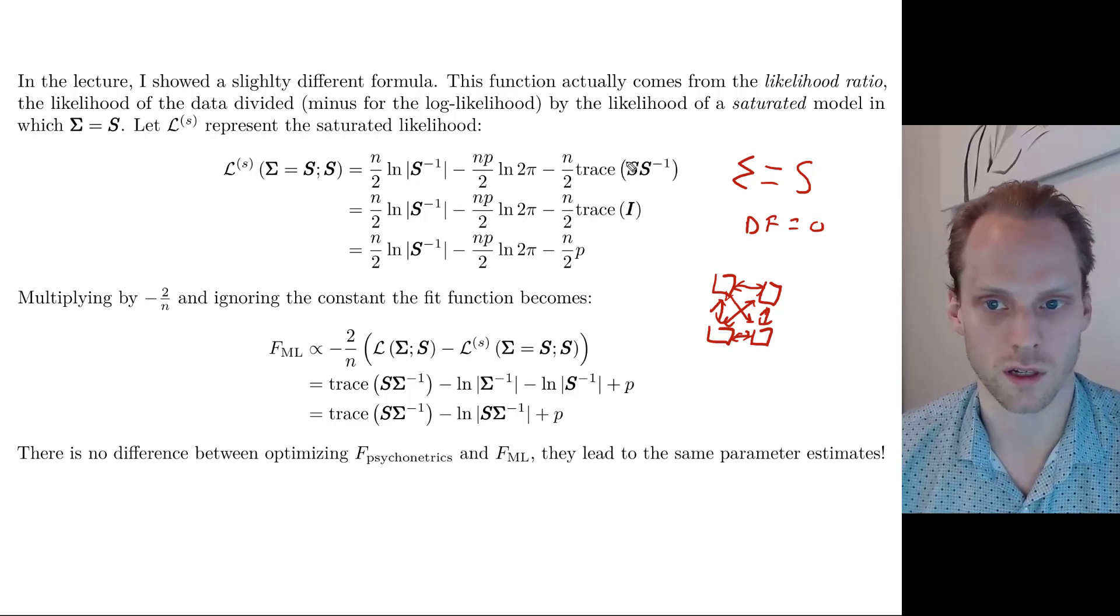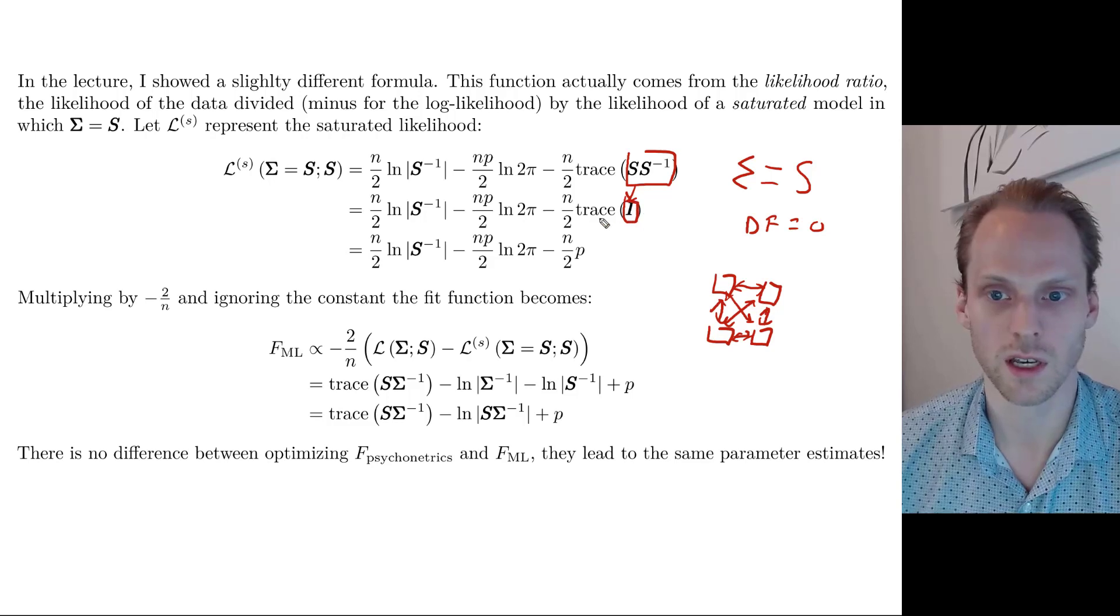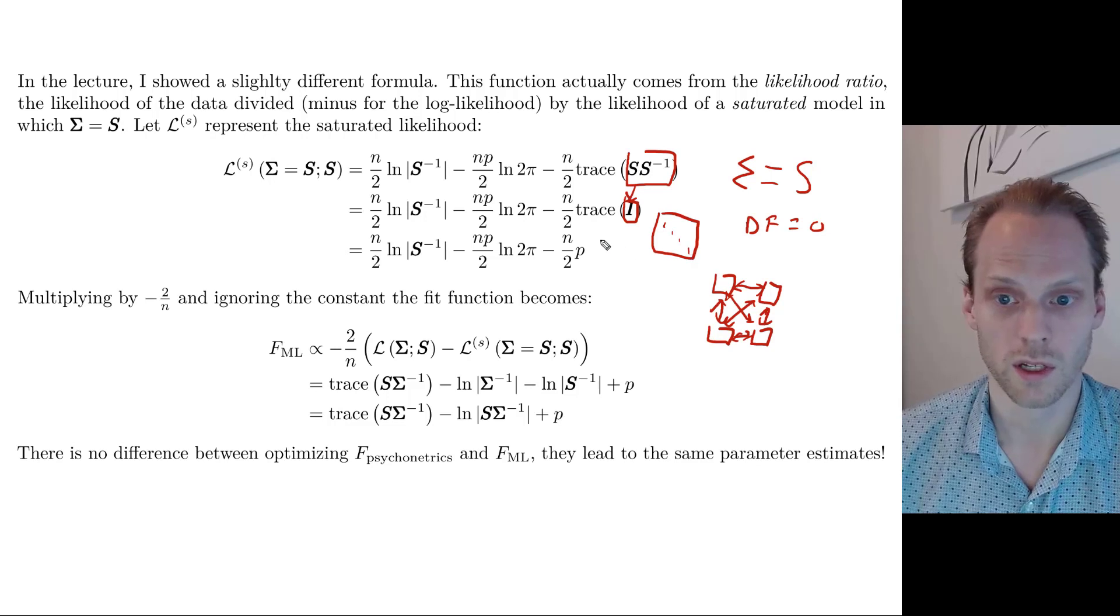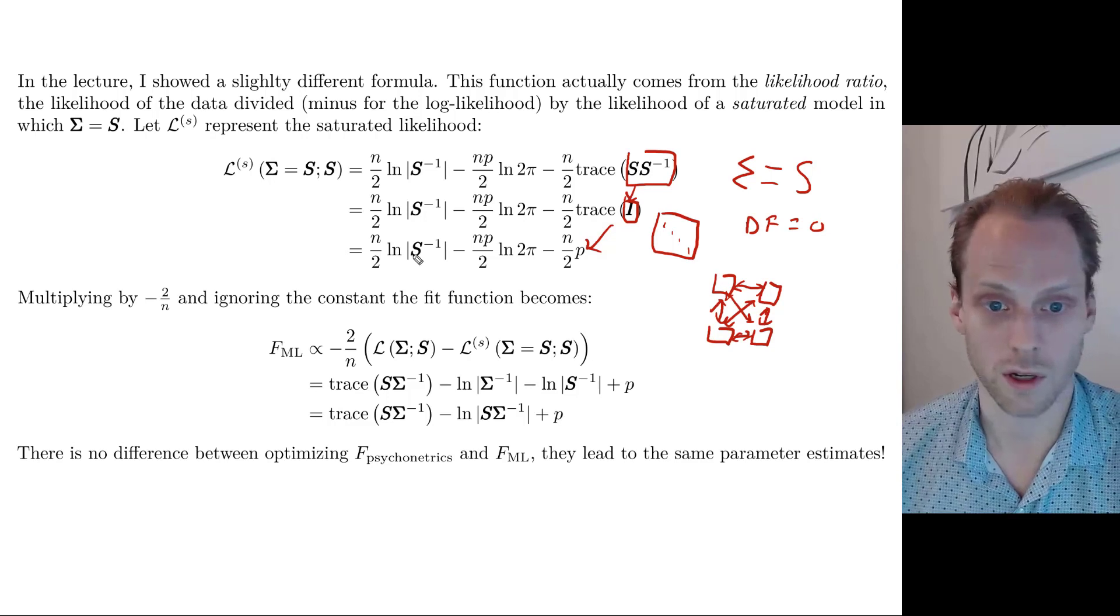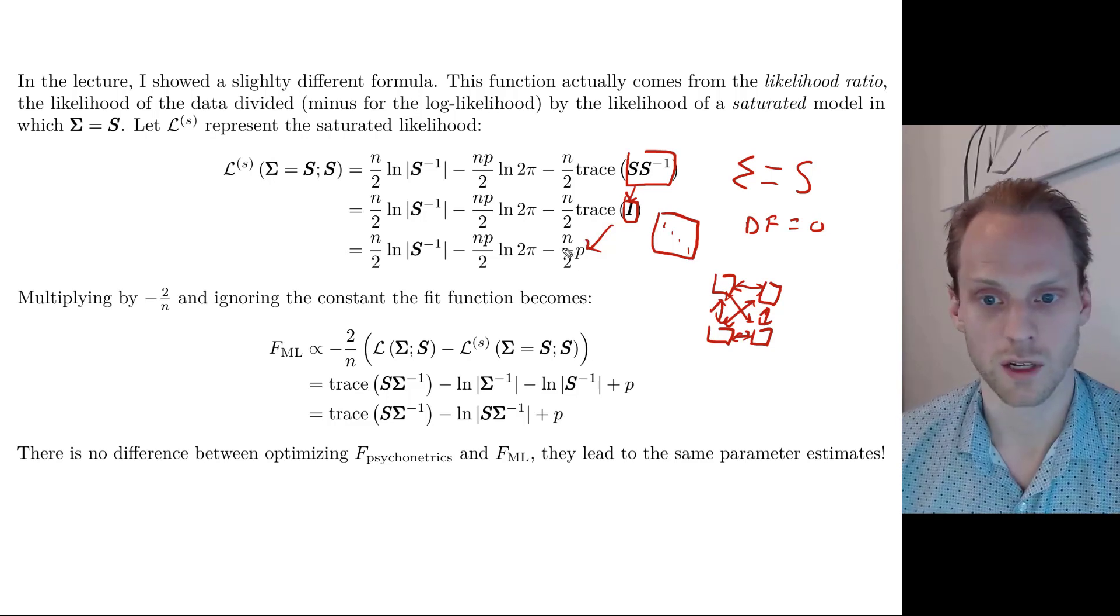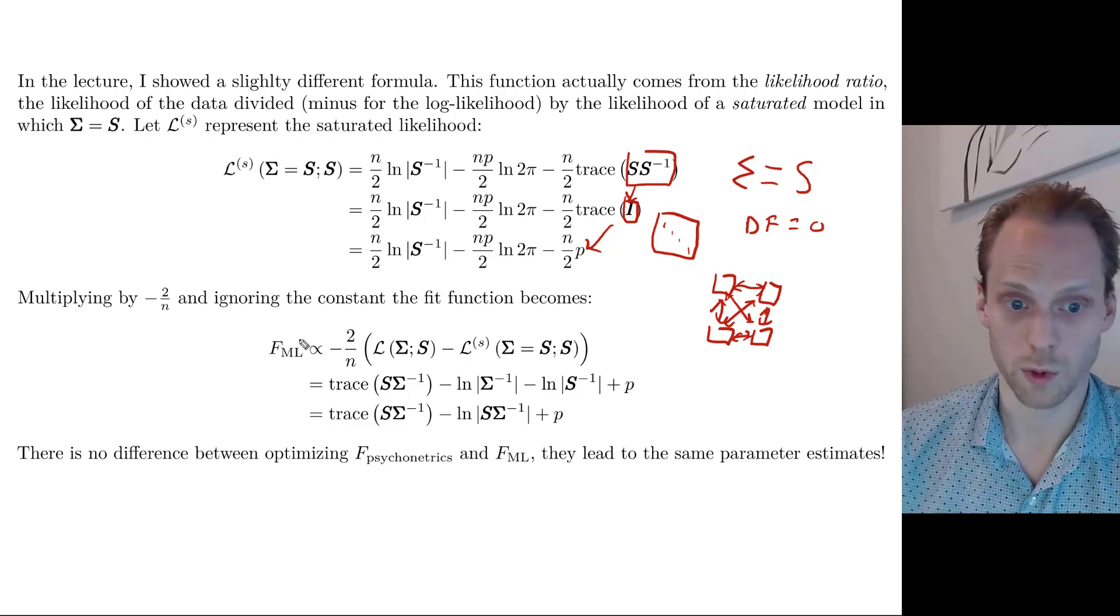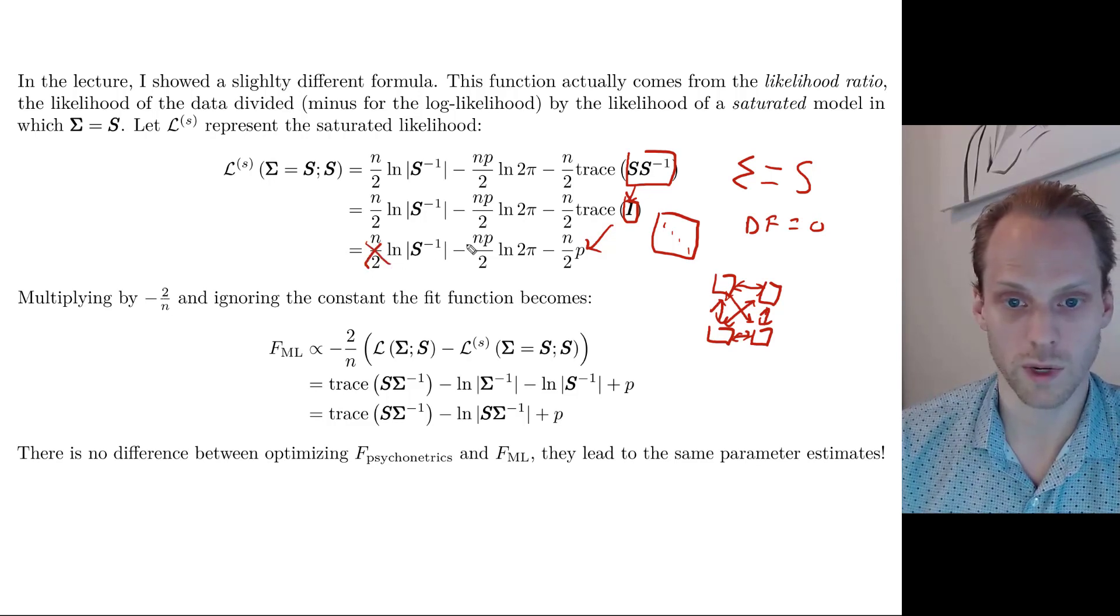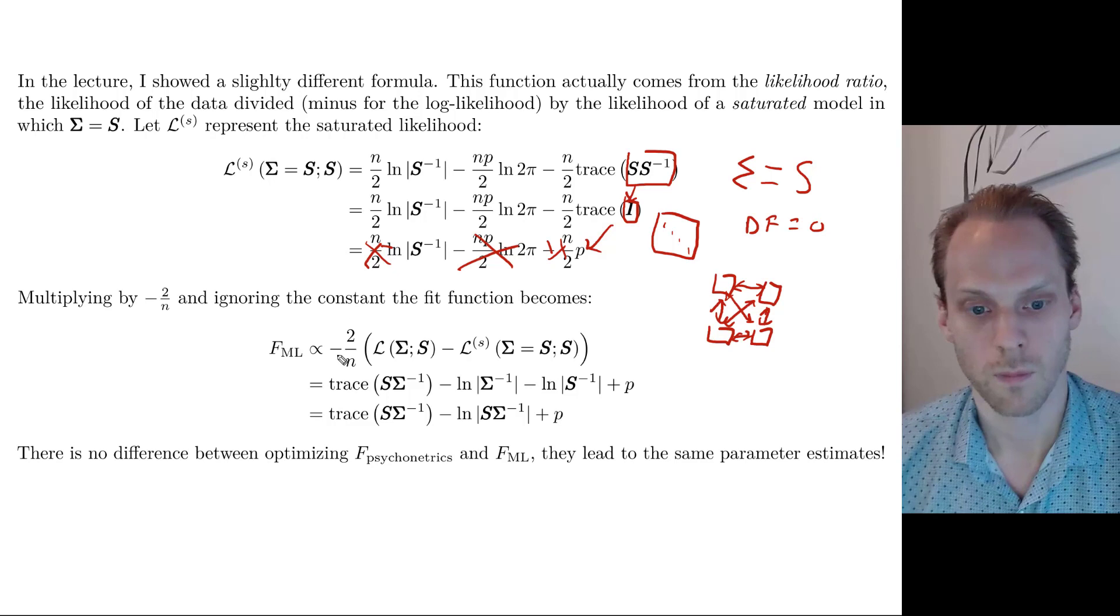So then what we do, we take our previous expression and we fill in s where there was sigma. And then we see something simple here. S times s inverse equals an identity matrix. The trace of an identity matrix - an identity matrix is this matrix with ones in the diagonal - simply the number of variables. So then we're left with log determinant of s inverse minus something times the number of variables. Then if we want to compute a fit function again, we can multiply this by 2 over n. So that these things drop out. We can ignore this whole thing. We can make it minus that this thing becomes a plus and this thing becomes a minus.